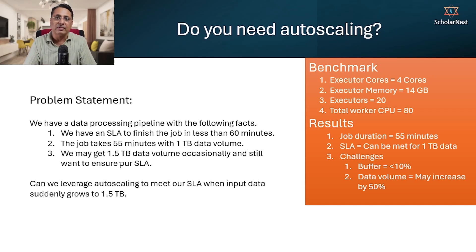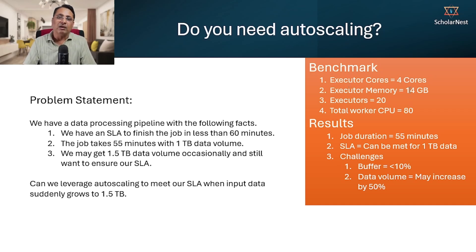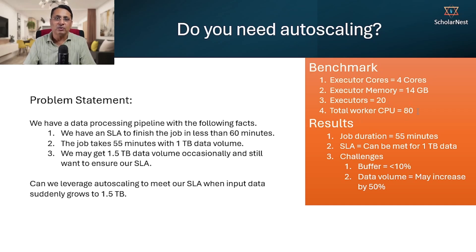This problem statement is carried forward from the previous lecture. In the previous lecture, we benchmarked one of our jobs where the same kind of requirement was there. Here are the estimates and results: we estimated using 4 CPU cores per executor, 14 GB memory per executor, and 20 executors to run this job in production, giving us 80 CPU cores in total. We benchmarked it with 1TB of data and the job took 55 minutes.